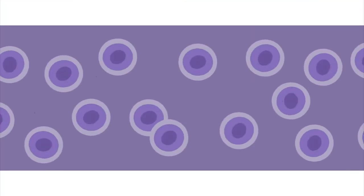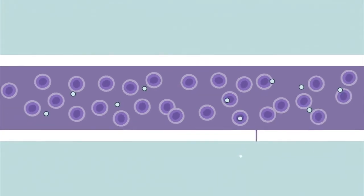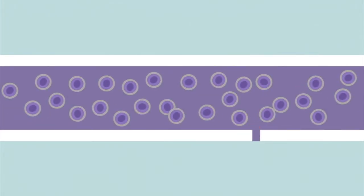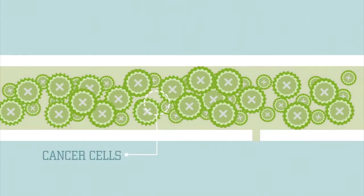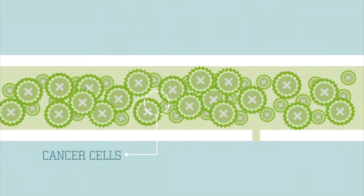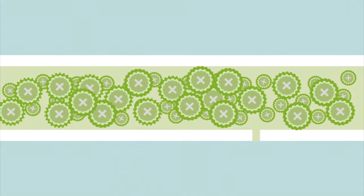In leukemia, some of the cells inside your bone marrow grow uncontrollably, crowding out the healthy stem cells that form your blood cells.